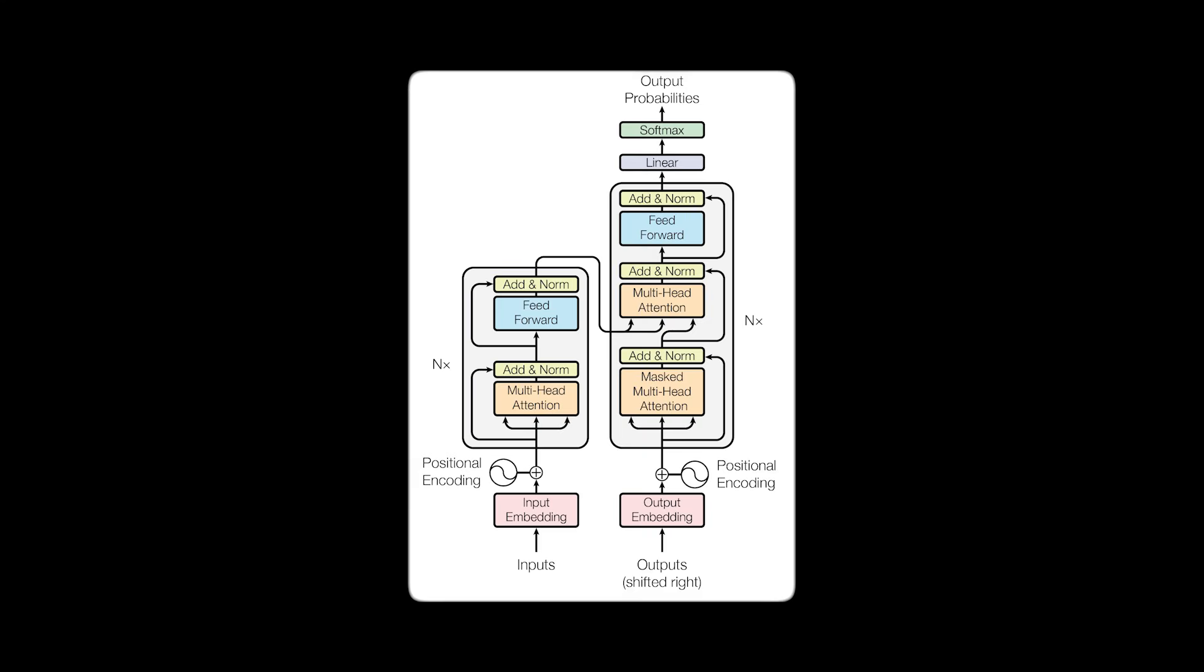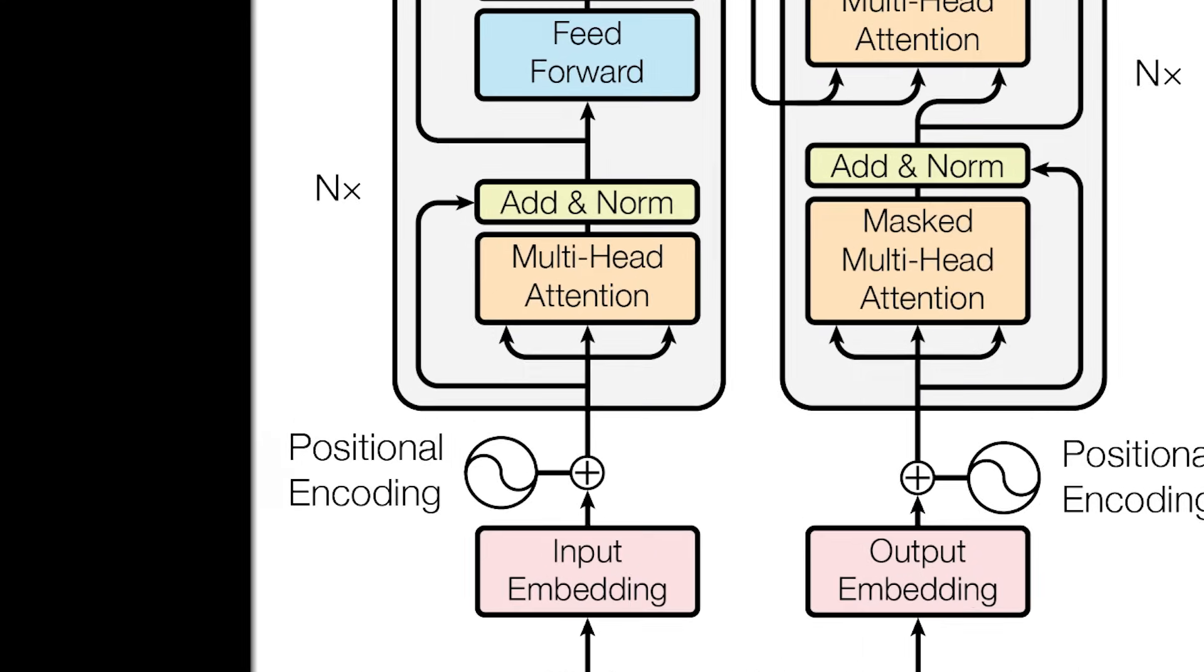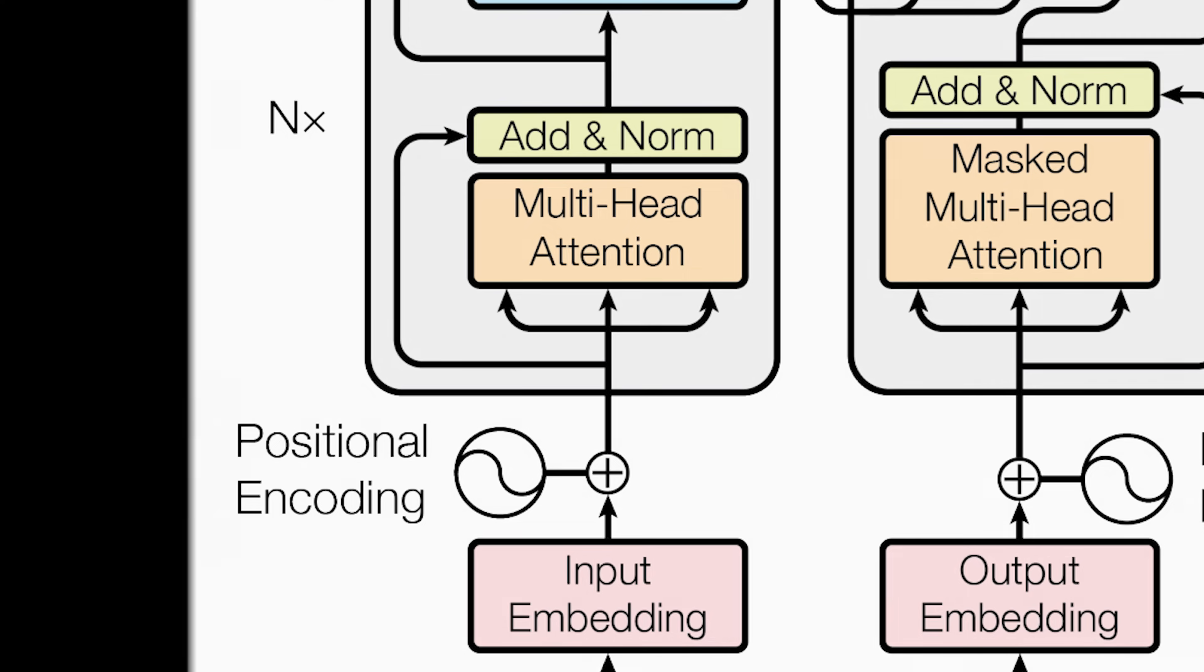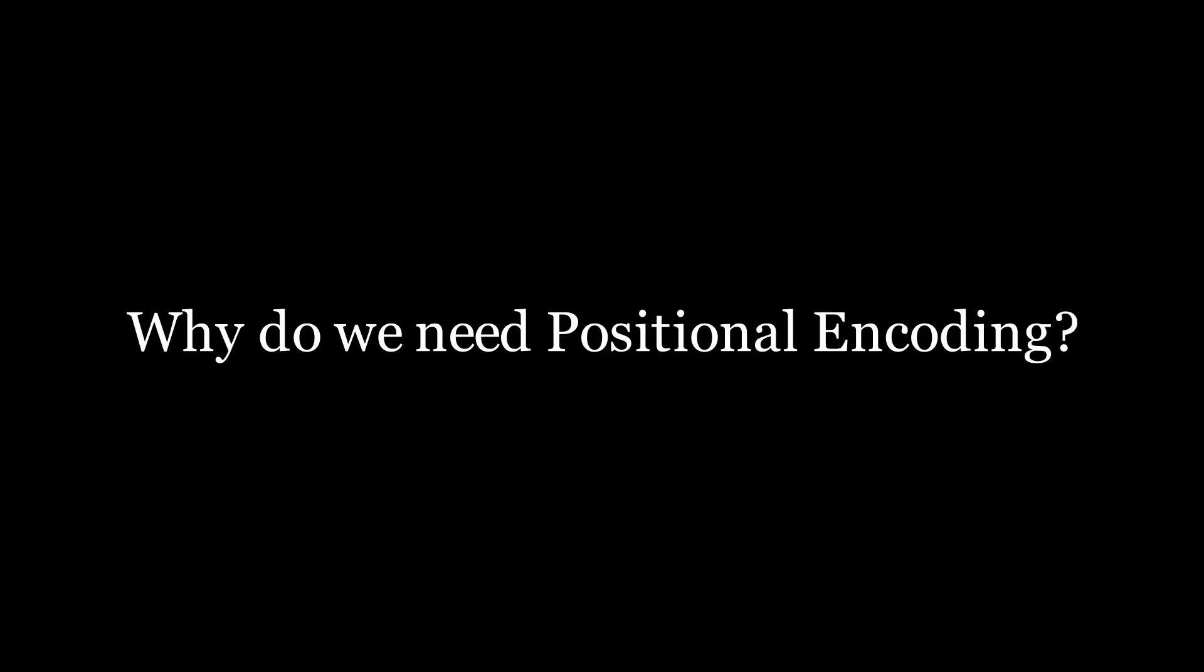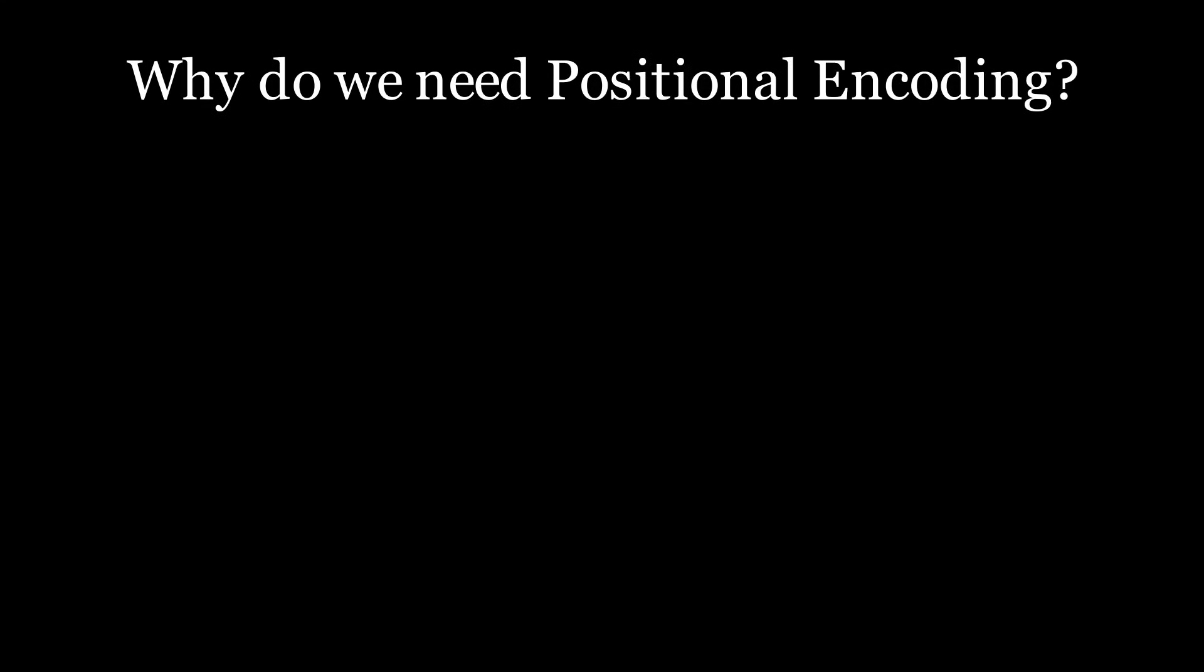Positional encoding is one of the most fundamental requirements of the transformer. If we look at the architecture, we'll see it's the first thing that embeddings go through. Let's start today by first understanding why we need positional encoding and what it would entail if it weren't there.